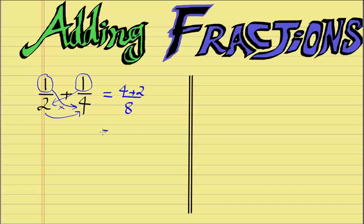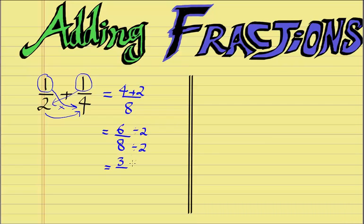We then simply add the 4 and the 2 which is 6, and then we keep our original denominator of 8 and we get 6/8. We can leave this here but we can actually further simplify this fraction. So we divide the top number by 2 and divide the bottom number by 2, because both 6 and 8 can be divided by 2. So 6 divided by 2 is 3 and 8 divided by 2 is 4. And 3/4 is our final answer for this question.